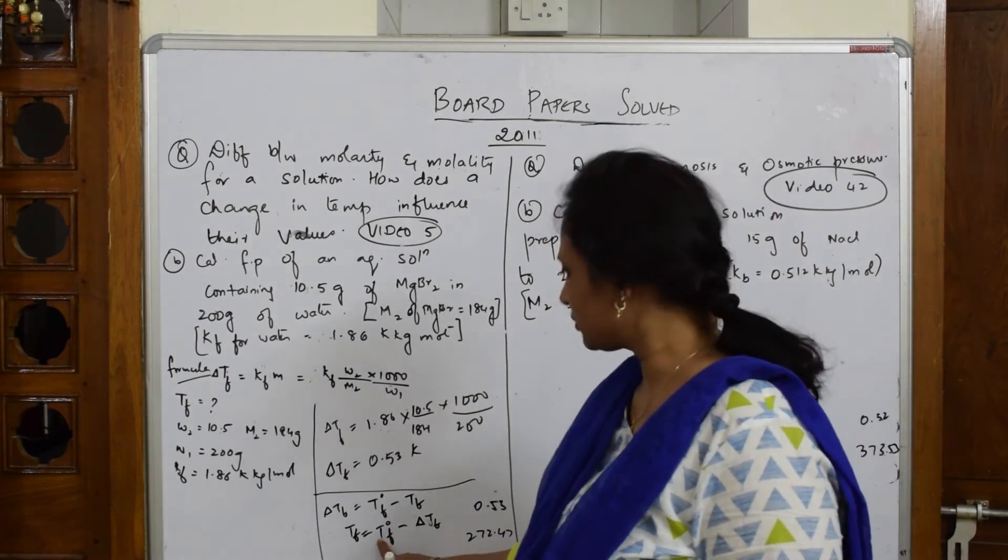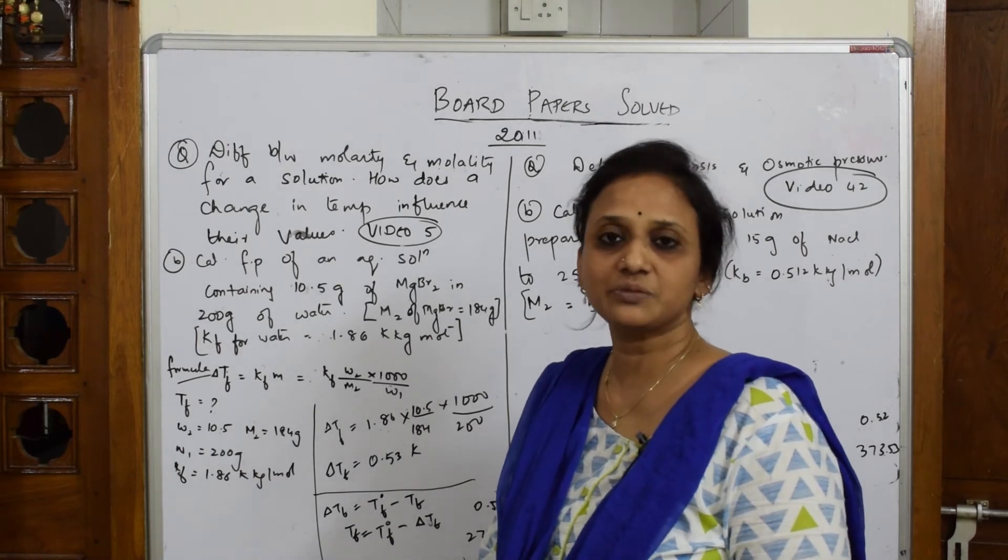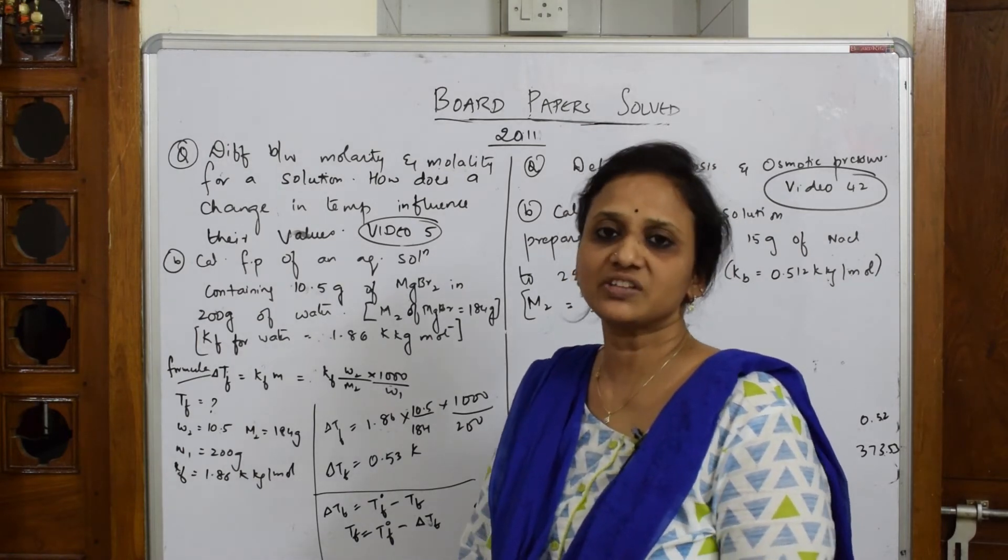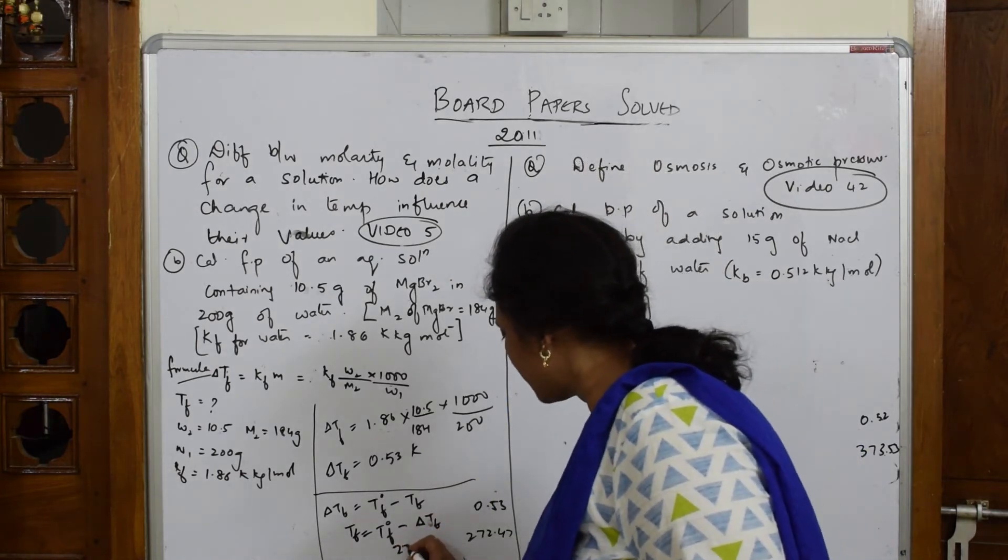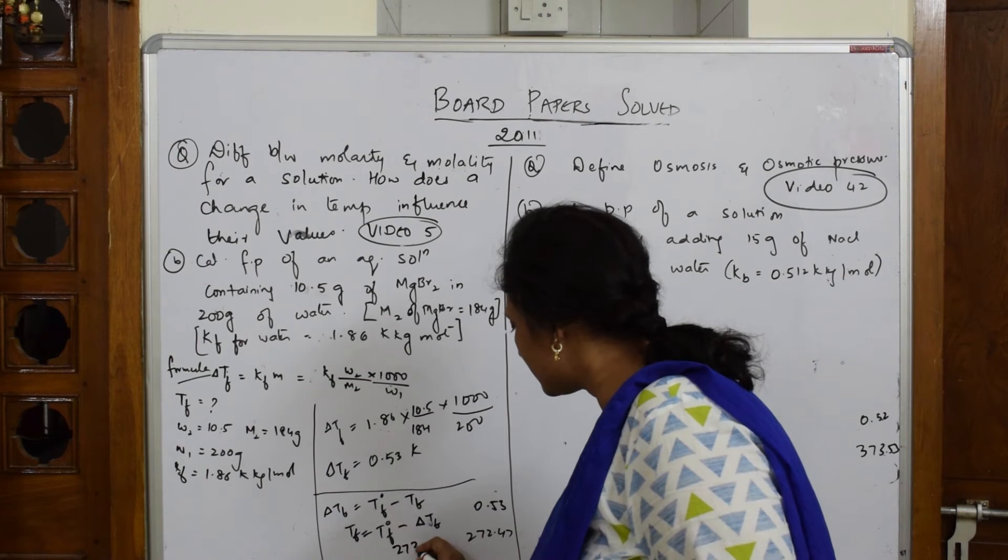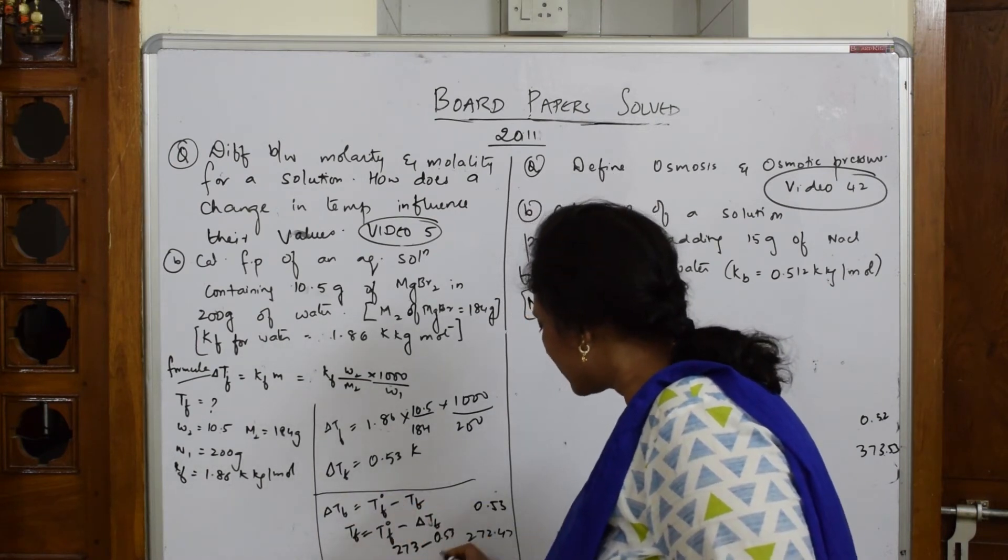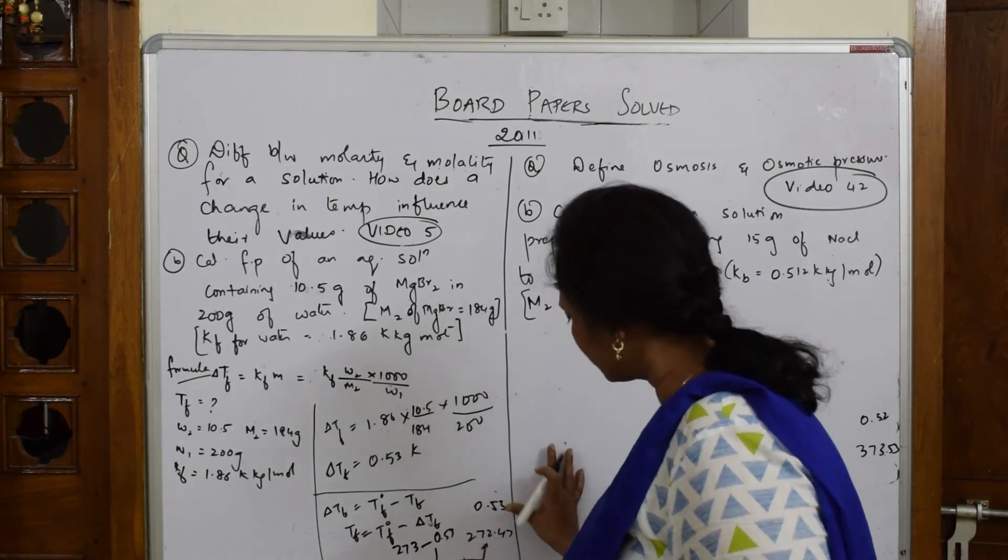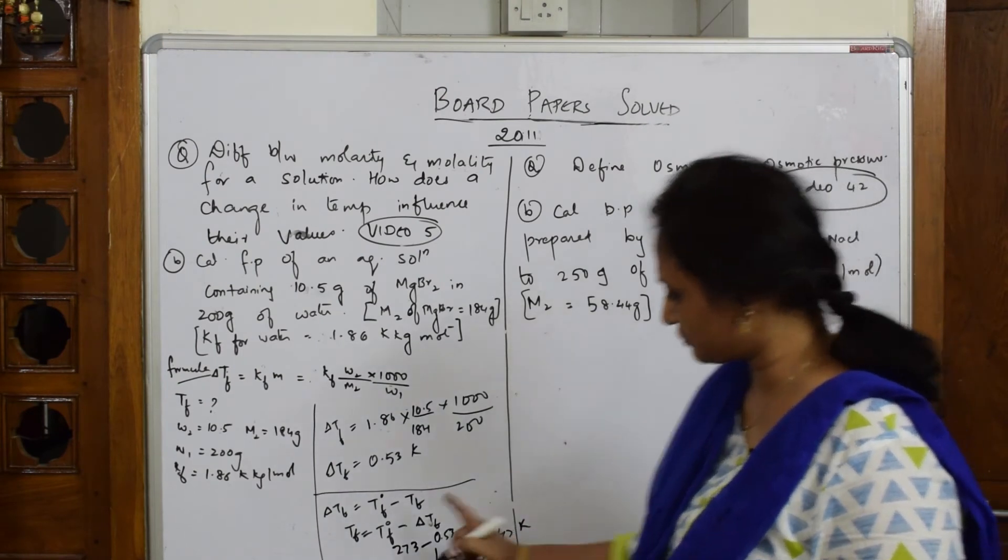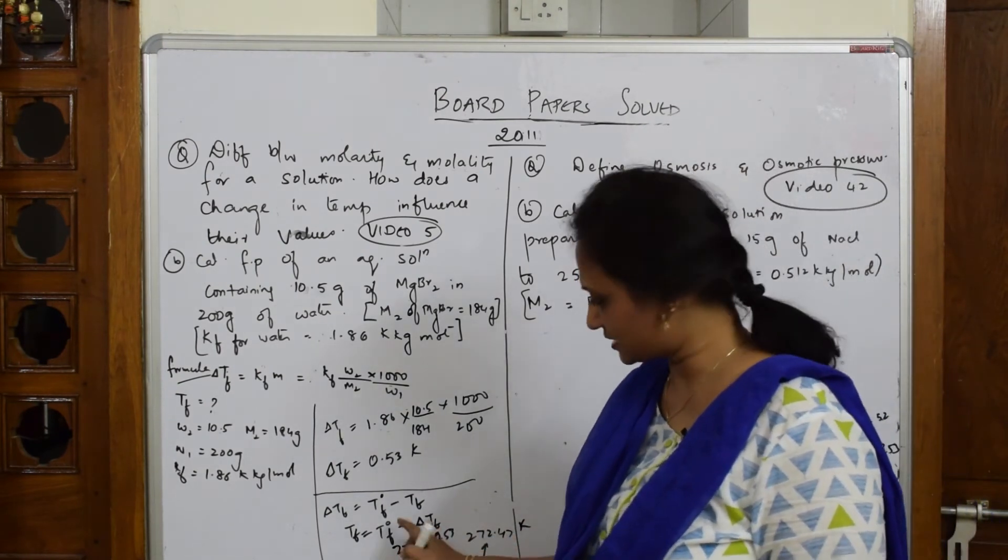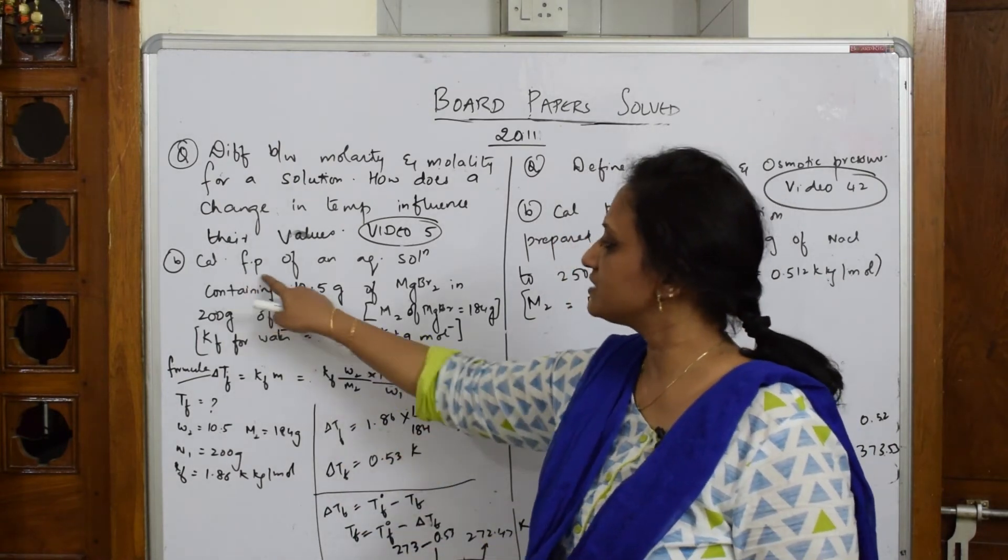T naught F is the freezing point of pure water, which is 273 Kelvin or zero degrees centigrade. So 273 minus delta TF, which is 0.53. When I solve this, I get 272.47 Kelvin.